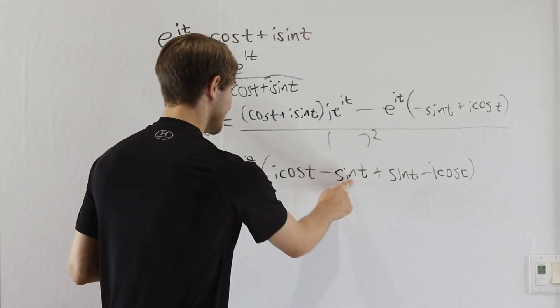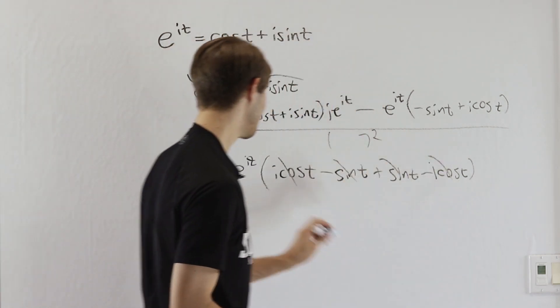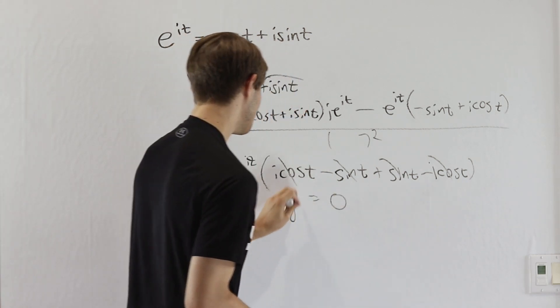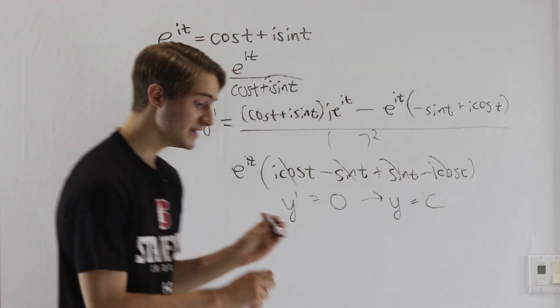Now if we look at this, we have sine t and sine t that are going to cancel out, and plus minus i cosine t are going to cancel out. This equals 0, so y prime equals 0. The only function whose derivative is 0 is a constant, so we know y equals c.